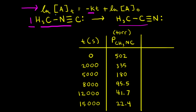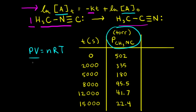Also notice that this form of the integrated rate law is in terms of the concentration of A, but we don't have the concentration of methyl isonitrile in our data table — we have the pressure of methyl isonitrile. Pressure is related to concentration from the ideal gas law: PV = nRT. Dividing both sides by V, pressure equals molarity times R times T. Therefore, pressure is directly proportional to concentration. For a gas, it's easier to measure pressure than to get the concentration, so you'll often see data for gases in terms of pressure.